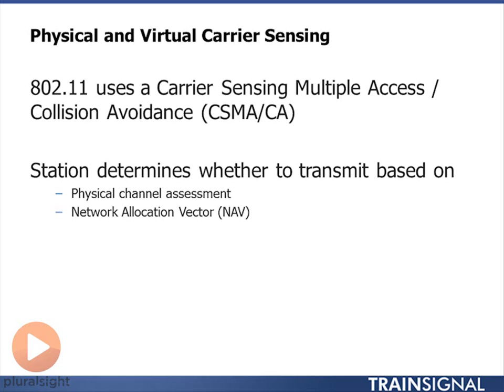The way we do collision avoidance is two things: a physical channel assessment and what's called the Network Allocation Vector, which is like a logical channel assessment. A physical channel assessment is literally when I listen — can I hear anybody transmit? If I can hear noise in the band, I won't transmit. That noise may be caused by another station in the same wireless LAN, a Bluetooth device, a microwave oven, or a neighbouring wireless LAN on the same channel. If the channel is quiet, I still don't transmit because I still have to look at the Network Allocation Vector, which is a logical way of seeing if the network is busy. I'll show you how that works in the next couple of slides.